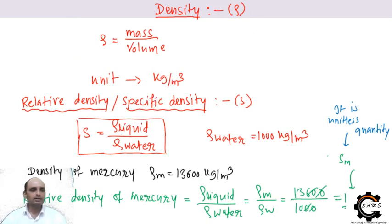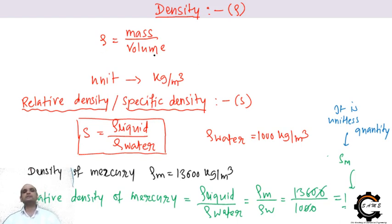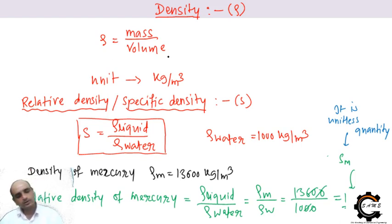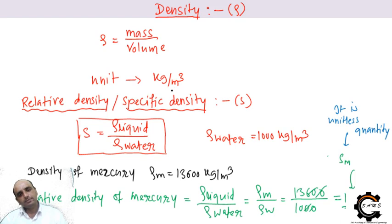Moving to density: density is mass per unit volume. The formula is ρ = mass/volume, and its unit is kg per meter cube. For example, if I take a block of steel and a wooden block of the same size and volume, the density of steel is higher than the density of wood, so steel is heavier for the same volume.